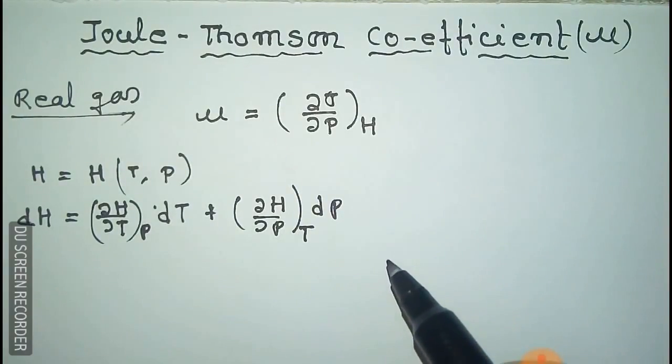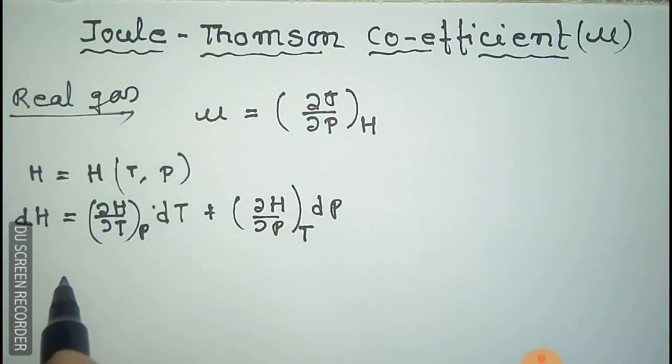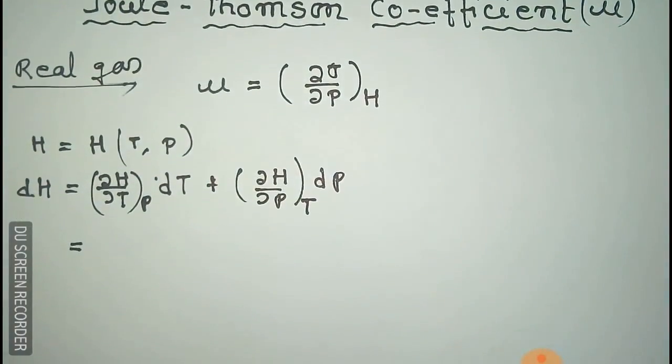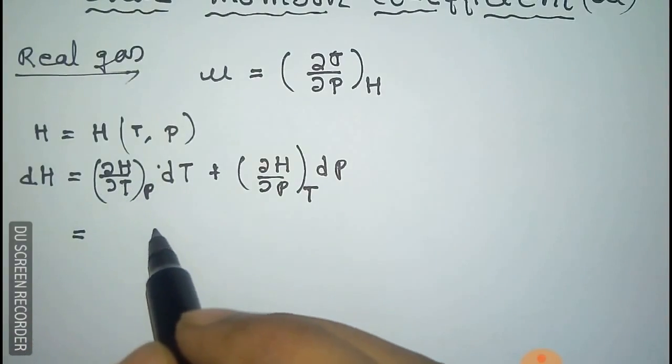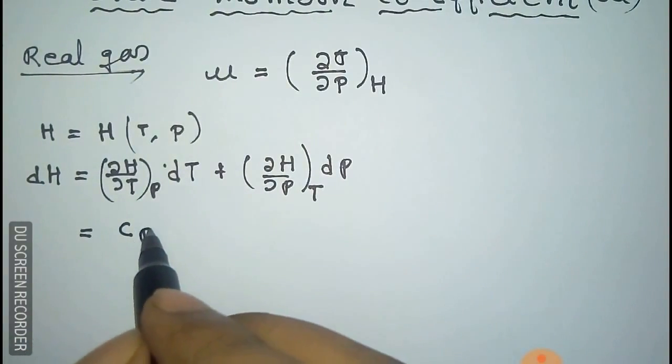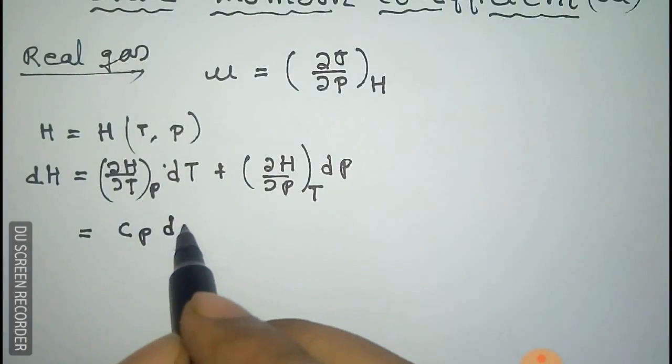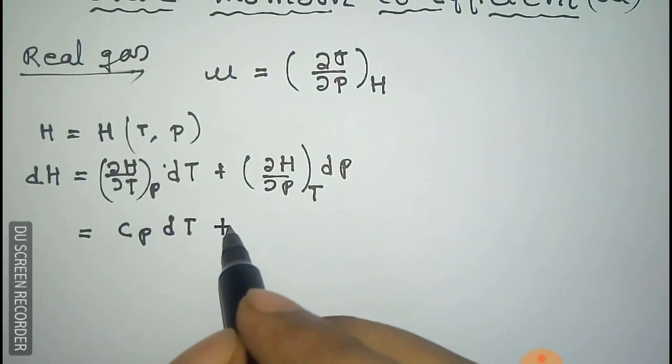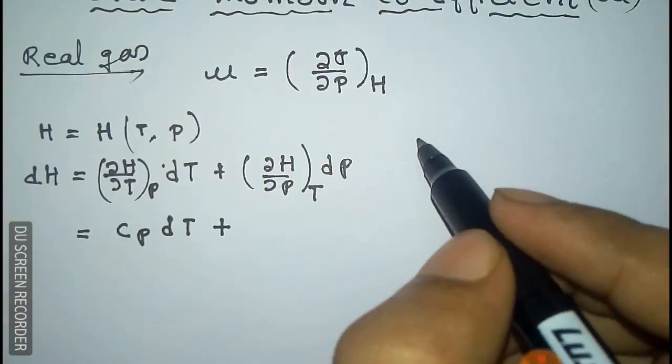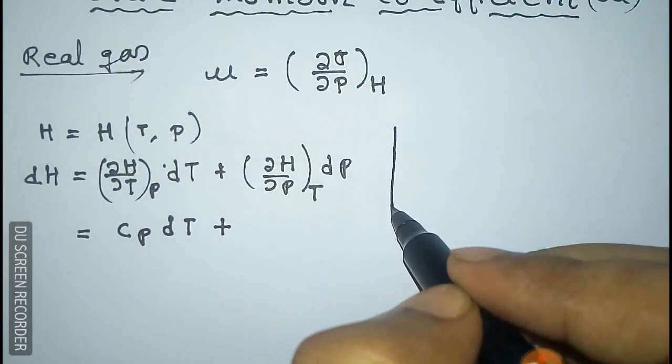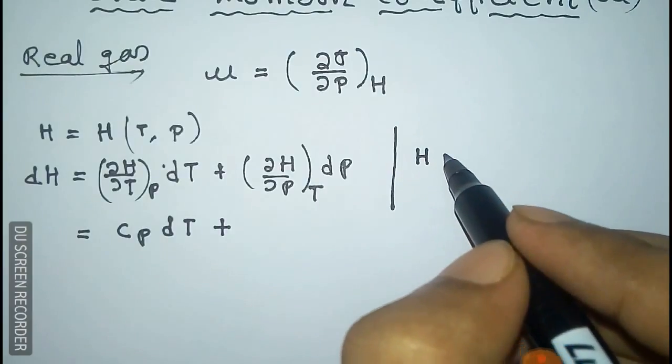Now this del H del T at constant pressure can be written as Cp, specific heat at constant pressure. But there is no term for del H del P, so we have to redirect it.